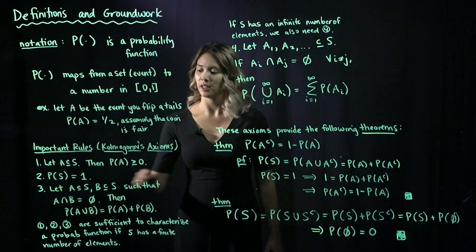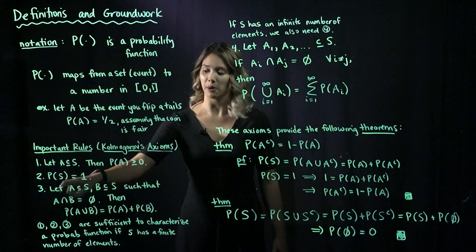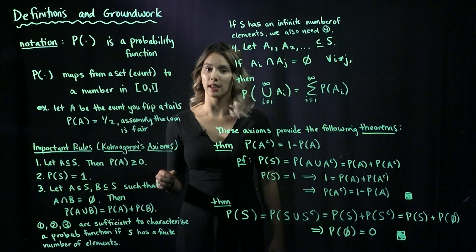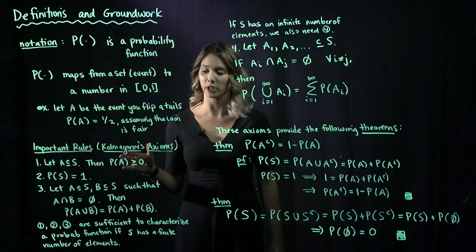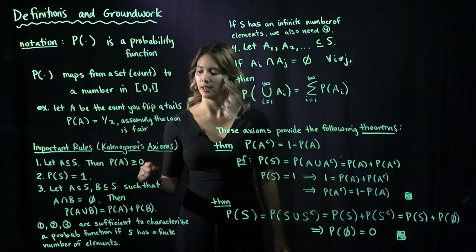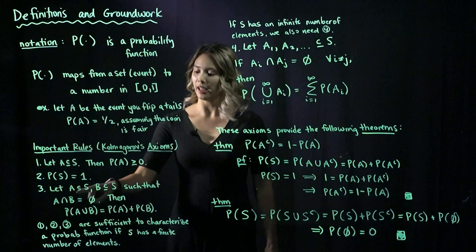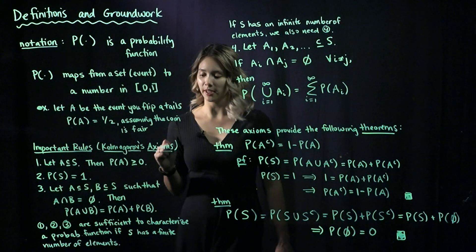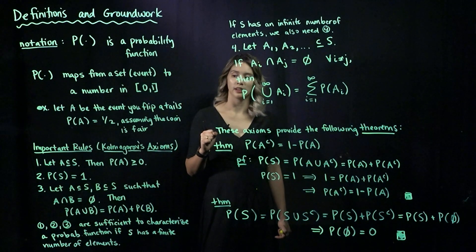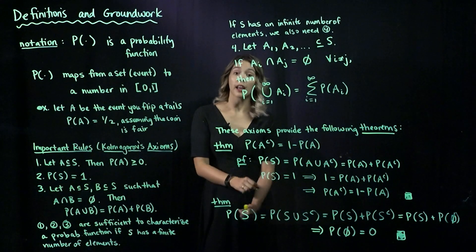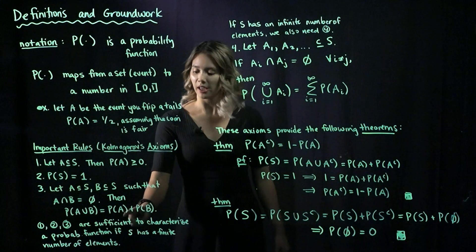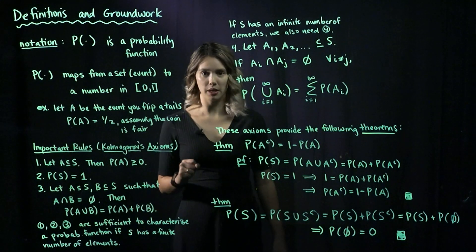The second axiom: S is our sample space, and the probability of S equals 1. This is saying the result of your experiment must lie in your sample space. Next: let A and B both be events in S such that A and B are disjoint. Then the probability of A union B is equal to the probability of A plus the probability of B.